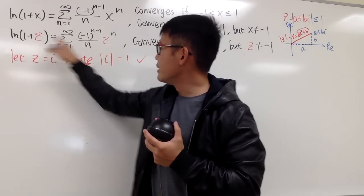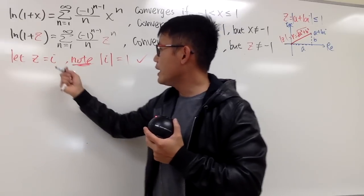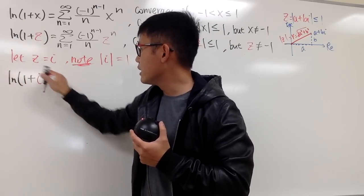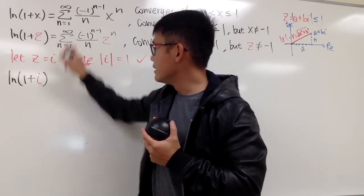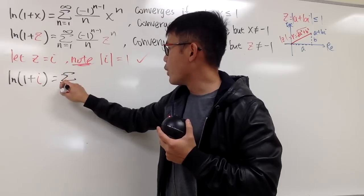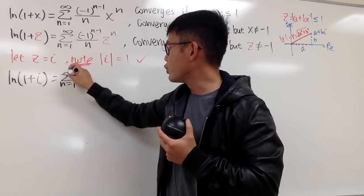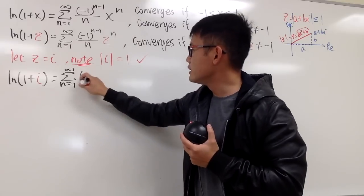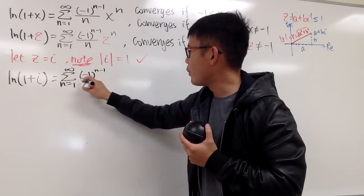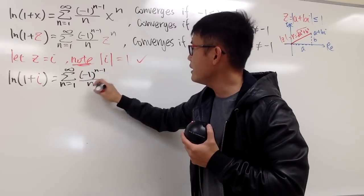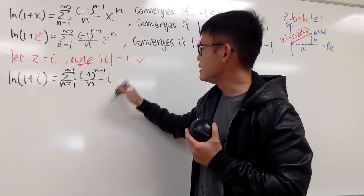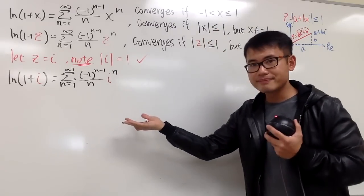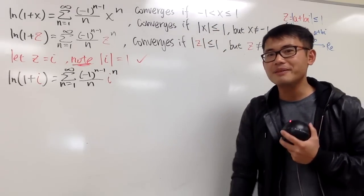Plugging i into both sides, on the left-hand side we have ln of 1 plus i, and on the right-hand side we have the sum when n goes from 1 to infinity of negative 1 raised to the n minus 1 power over n, times i to the nth power, and this converges.